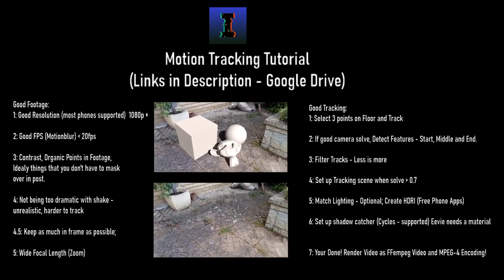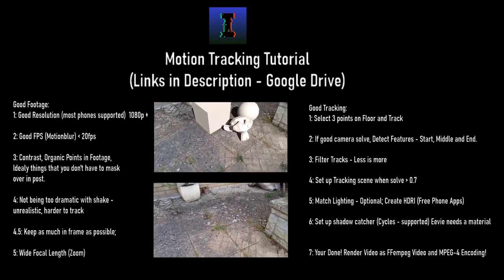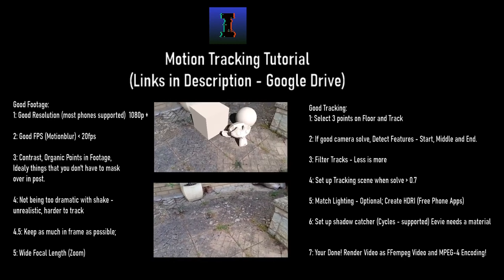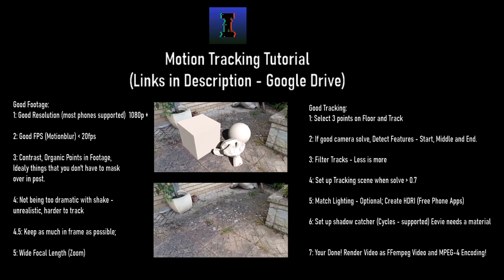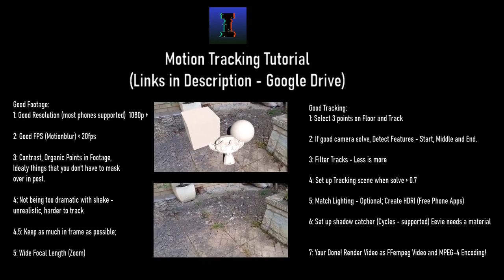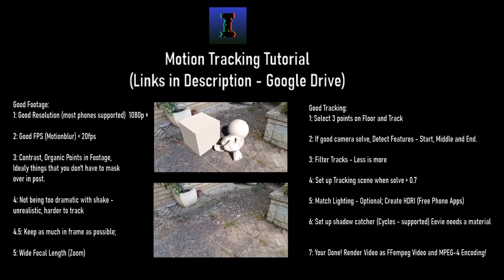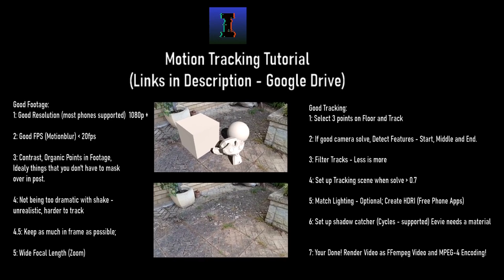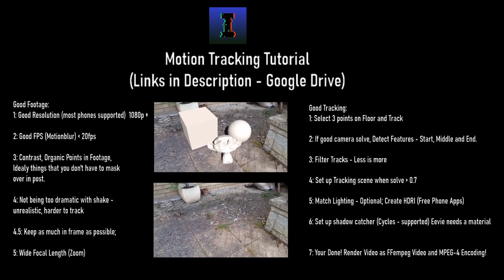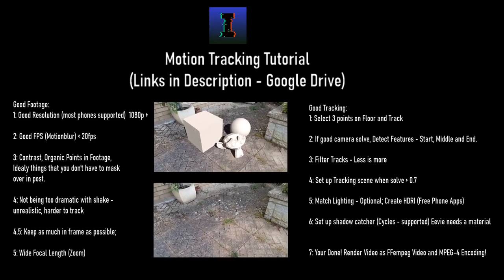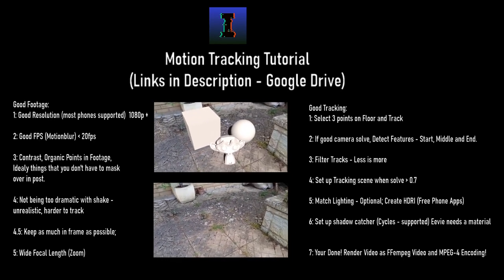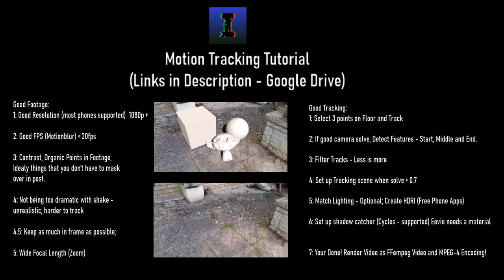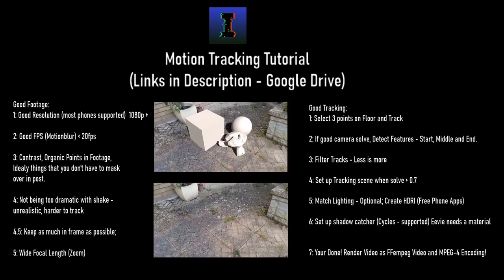Next is good FPS, which relates to motion blur. If you have a lot of motion blur, that's a problem. I had 30 FPS on my phone, so that's really good. 30 FPS or even 60 FPS will get you a really good camera solve. Anything more than 20 FPS is fine, but any less than that means you'll have a lot of motion blur and unless you keep the camera virtually still, it's going to be impossible to track.